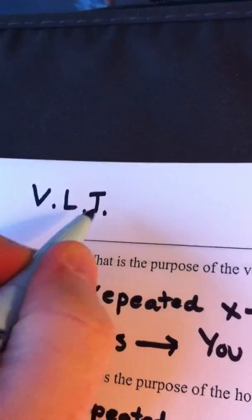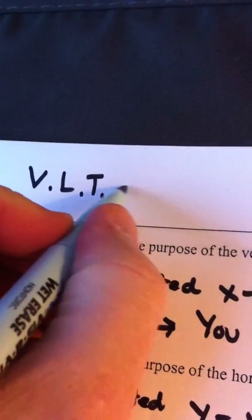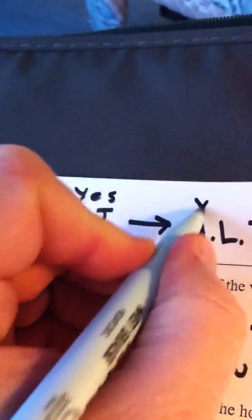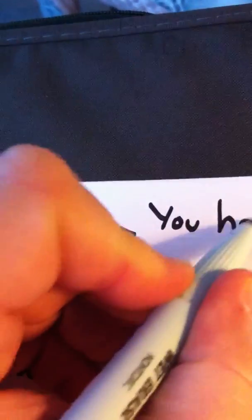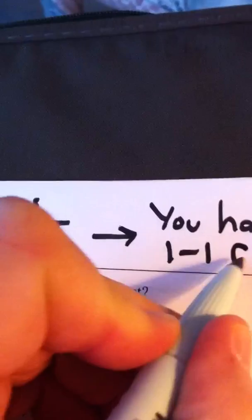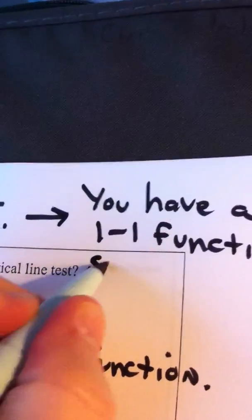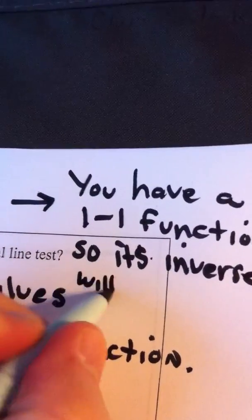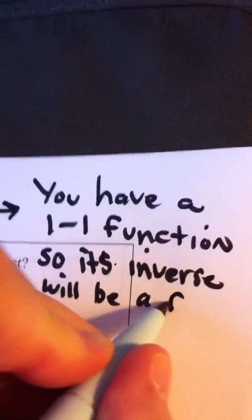So basically, if you pass the vertical line test and then you pass the horizontal line test - if both of these are yes and yes - then that means you have a one-to-one function. So its inverse will be a function too.